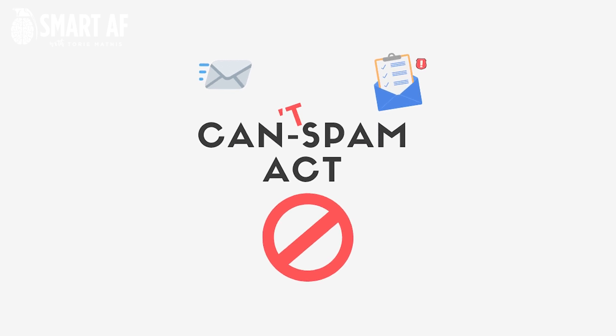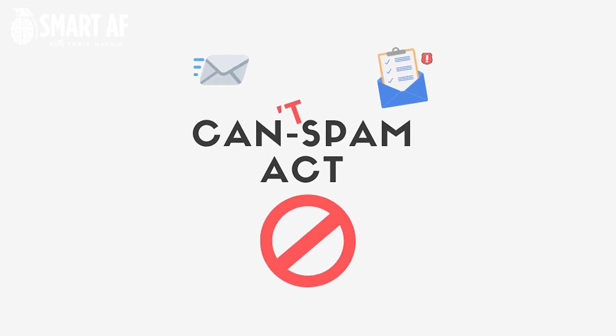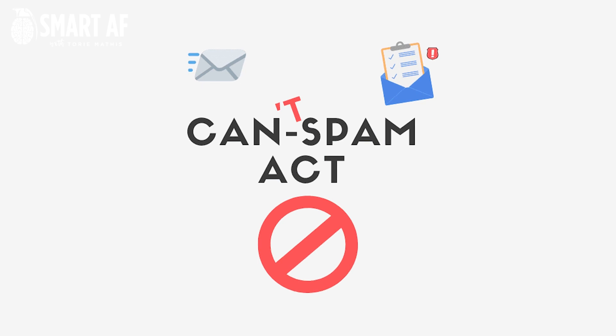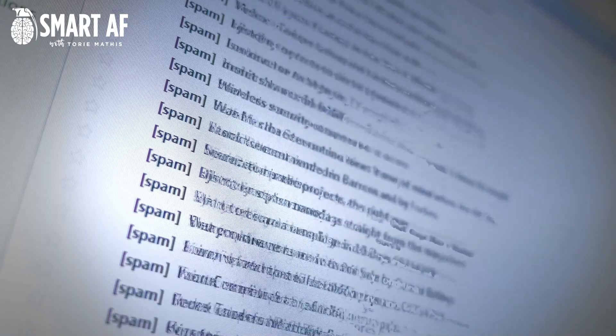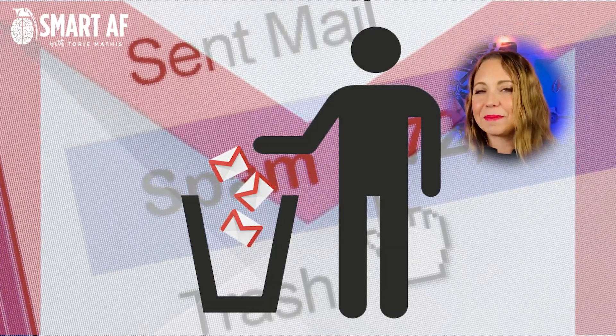The CAN-SPAM Act is a federal law that sets rules for commercial email and establishes requirements for sending email messages, and gives recipients the right to stop email from being sent to them. Any email message sent to a recipient without their consent is considered spam. An email marketing software will help ensure your messages are not considered spam and will help you avoid any potential penalties associated with the CAN-SPAM Act. You don't want to end up in the spam folder or locked up behind bars.